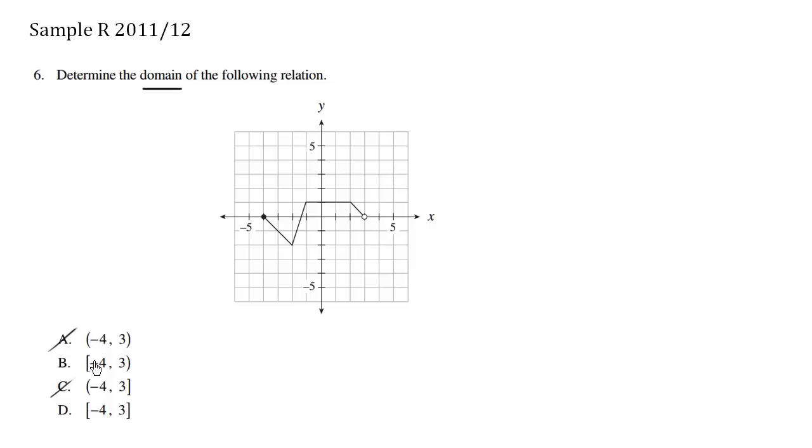So this is negative 4, including the end point. So we want a square bracket all the way to the rounded circle here at 3. So this is going to be a, not this one here, this one here is closed, whereas this one here is open. So the answer here is B.